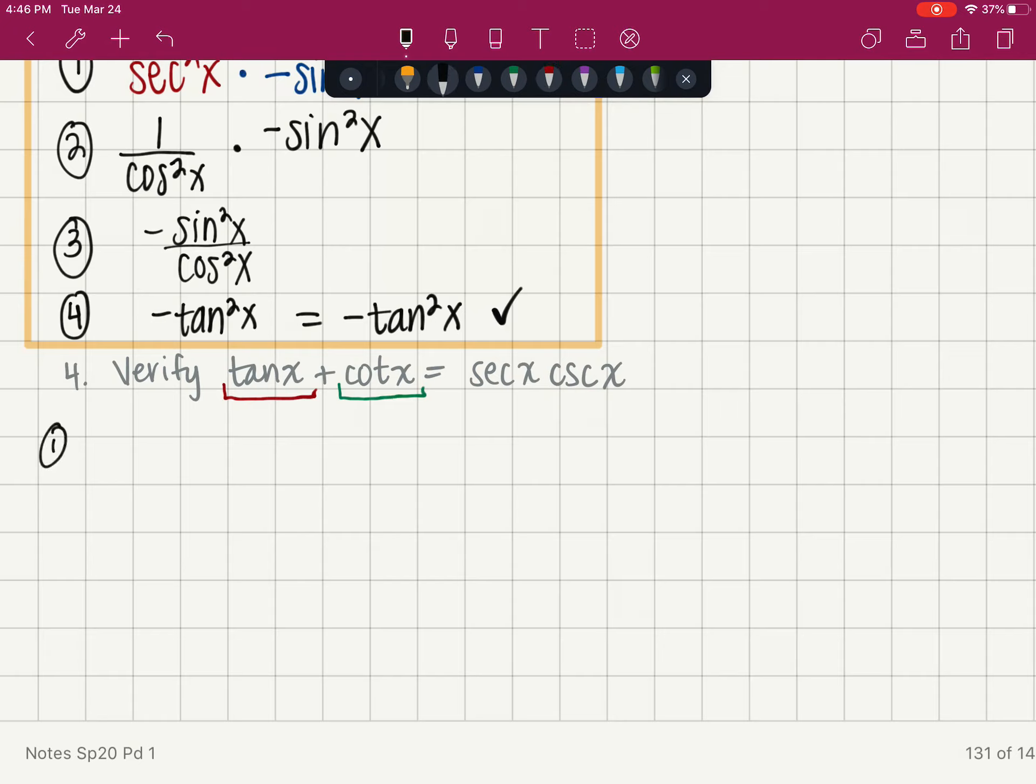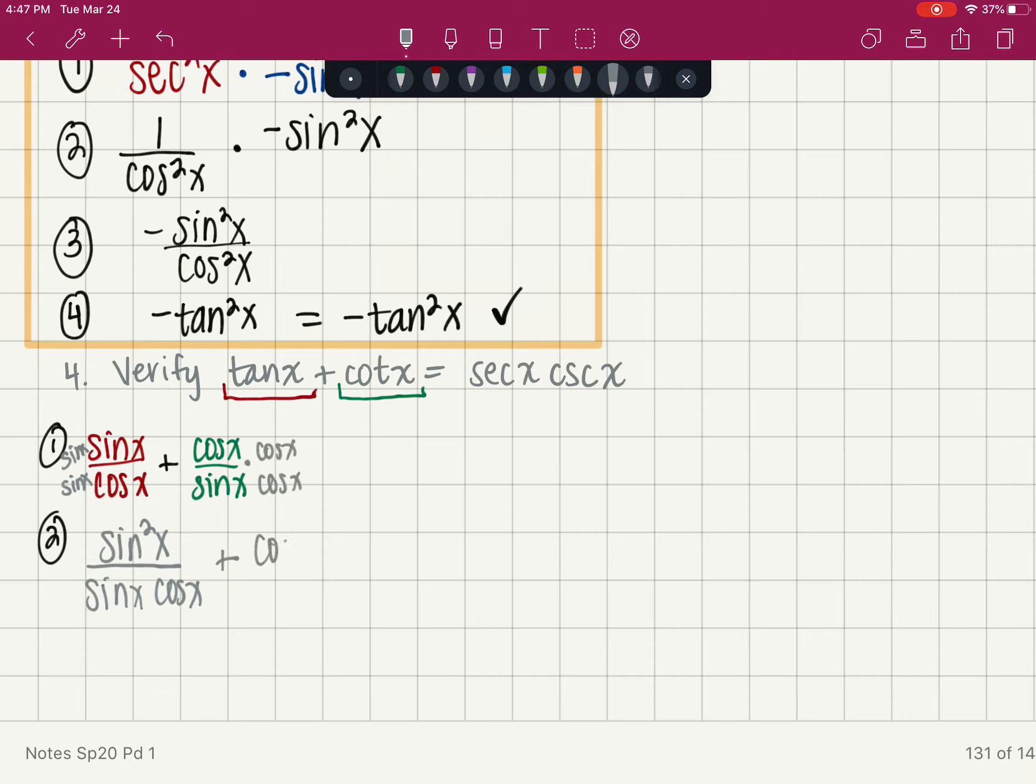So step one will be to make tangent of x sine of x over cosine of x, and I have a plus. And then I've got cotangent of x, which is cosine of x over sine of x. I'm going to create a common denominator. So I'm going to multiply the first fraction by sine over sine, which gives us sine squared over sine of x cosine of x, plus the second one I'm going to multiply by cosine over cosine, which is cosine squared of x over sine of x cosine of x.